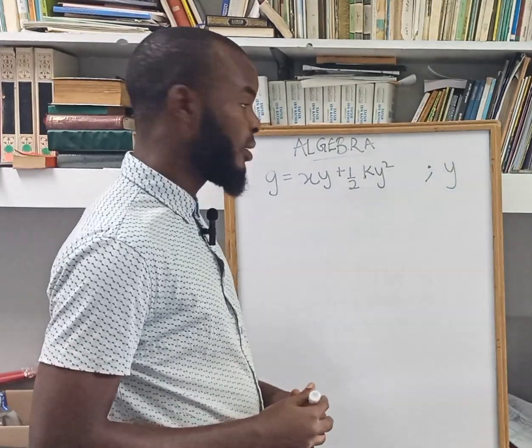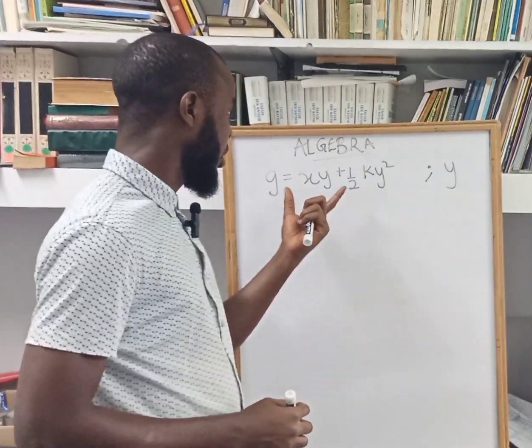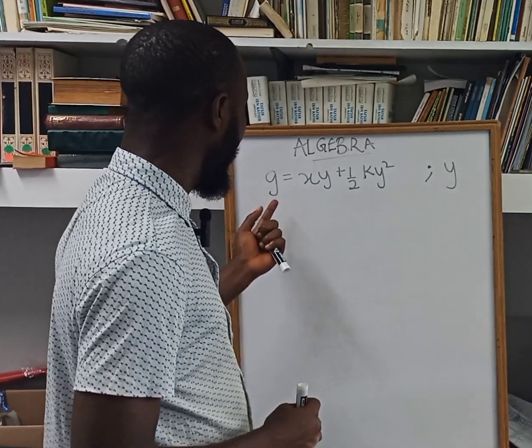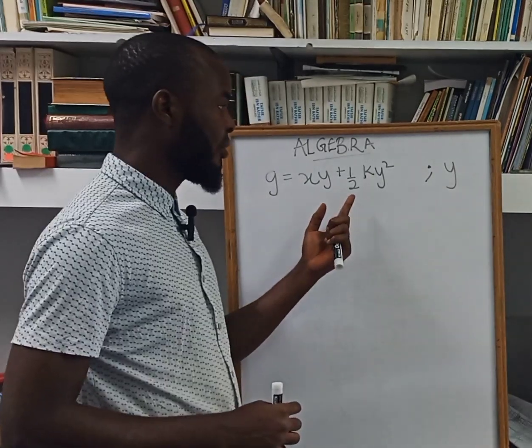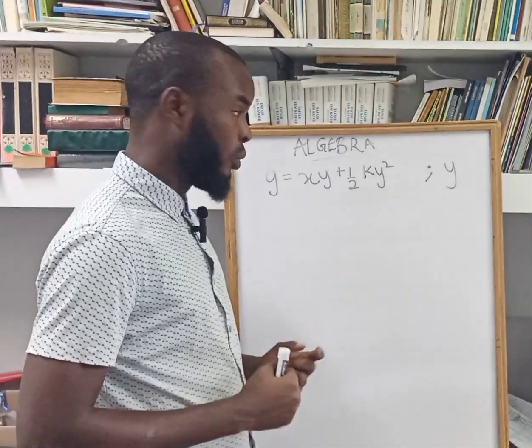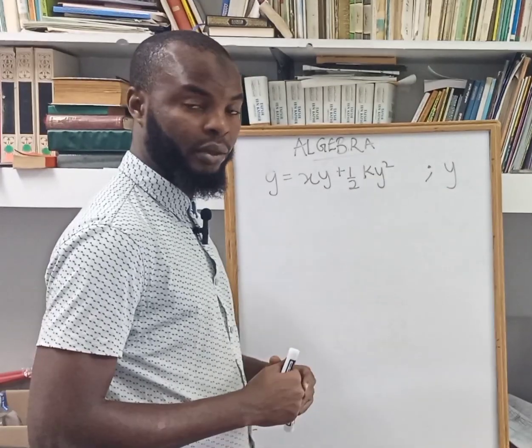Hello viewers, welcome back to another class. Today we want to solve this algebra. Here we have g equals xy plus half ky squared and we want to make y the subject of the formula.